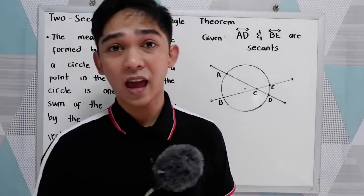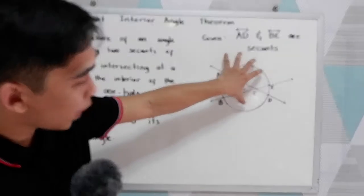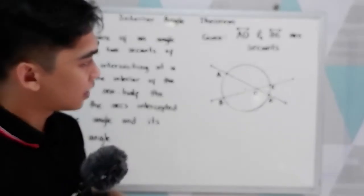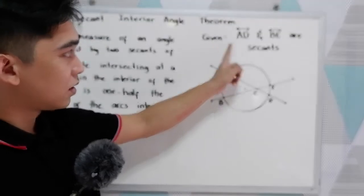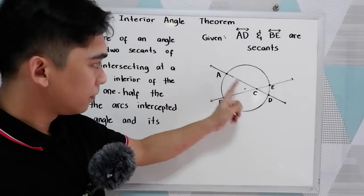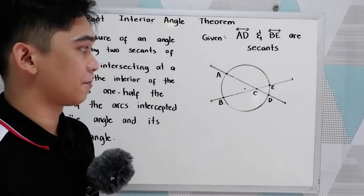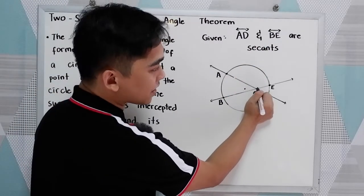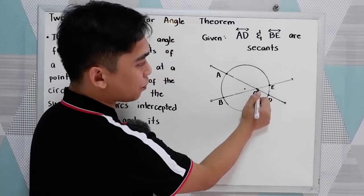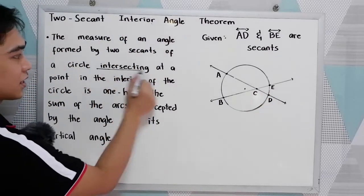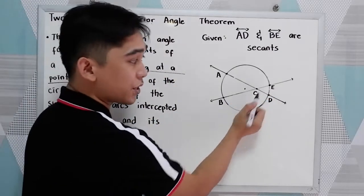Okay, to better understand, let's have this illustration. We have a circle here, and we have AD and BE are secants. They intersect at exactly one point, which is point C, intersecting at a point which is point C here.